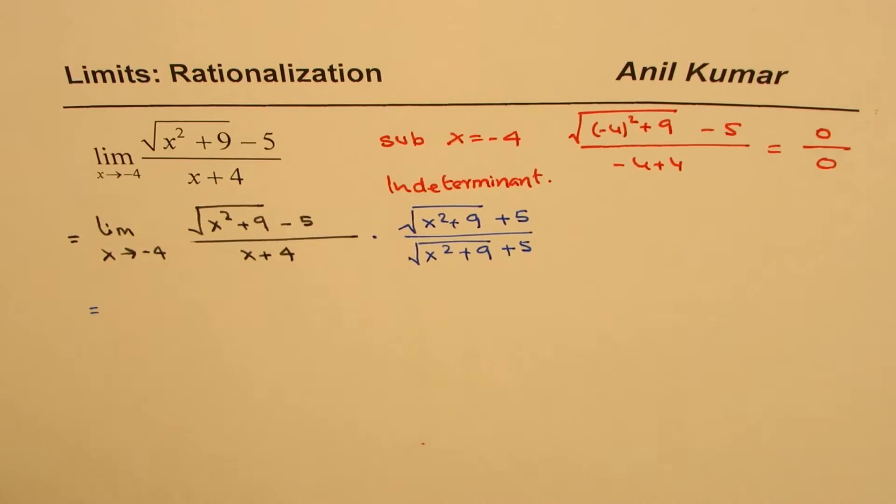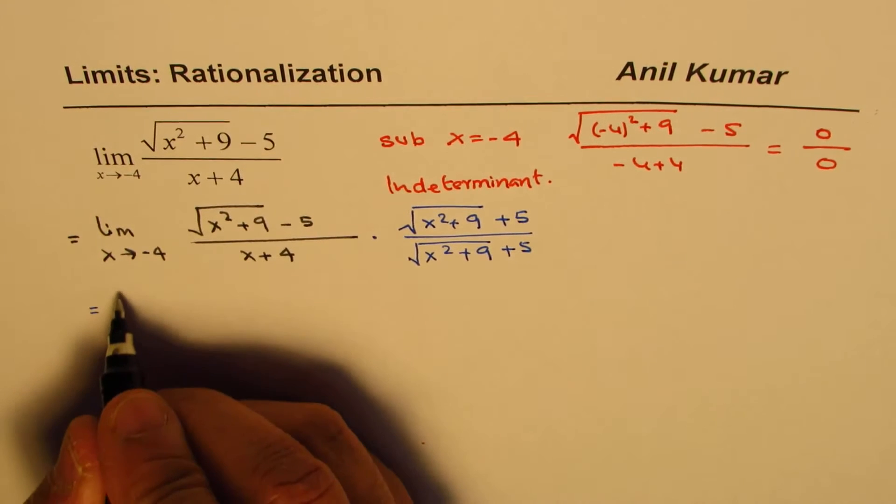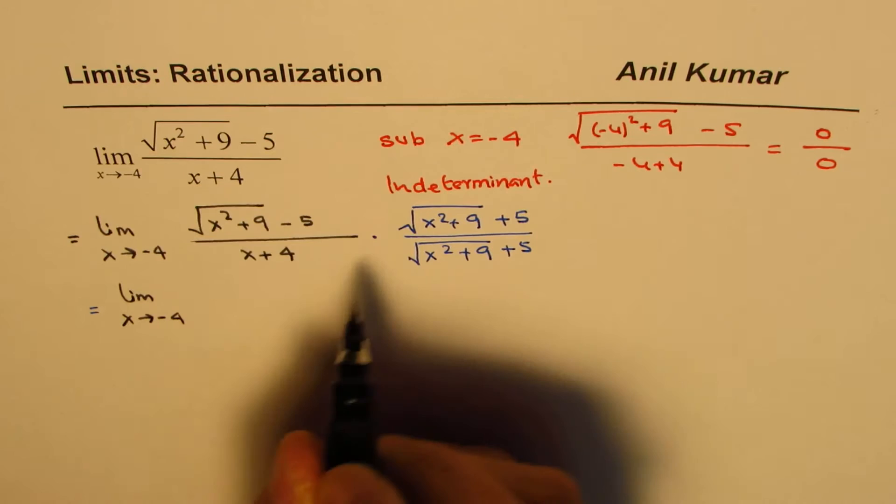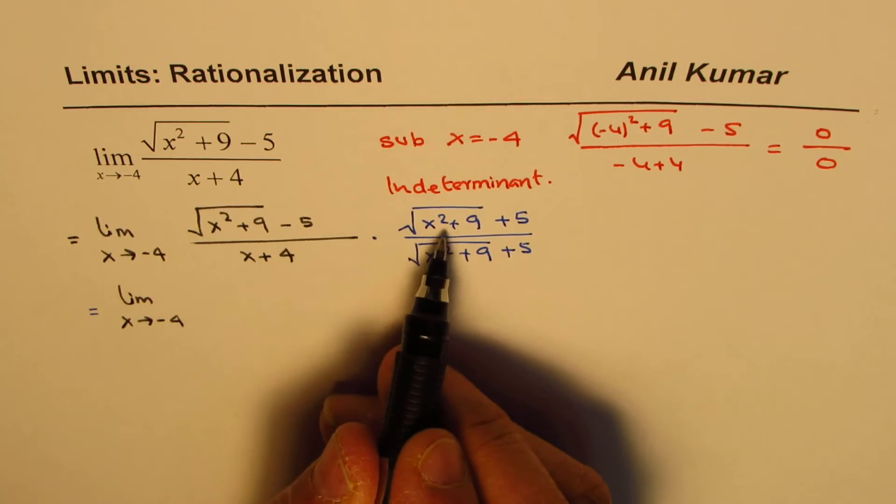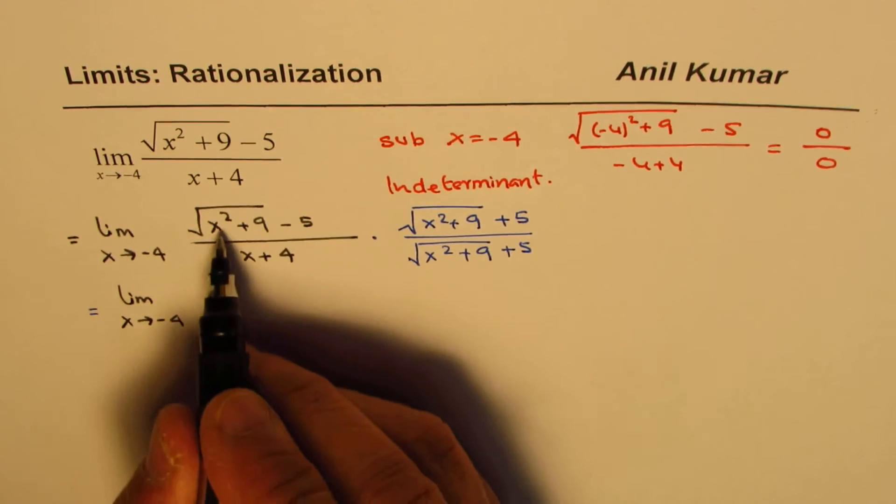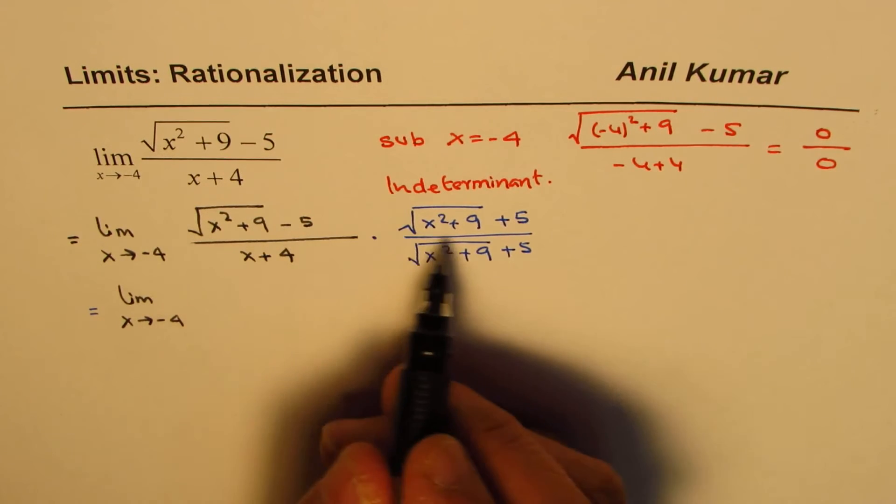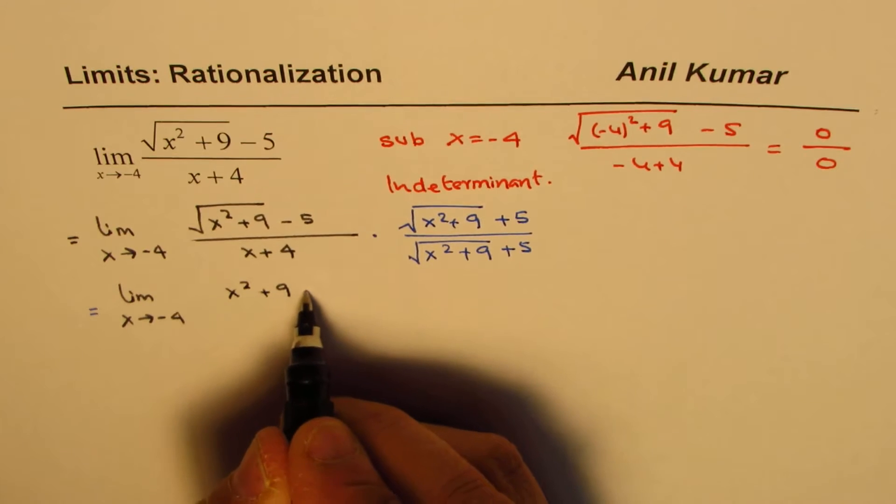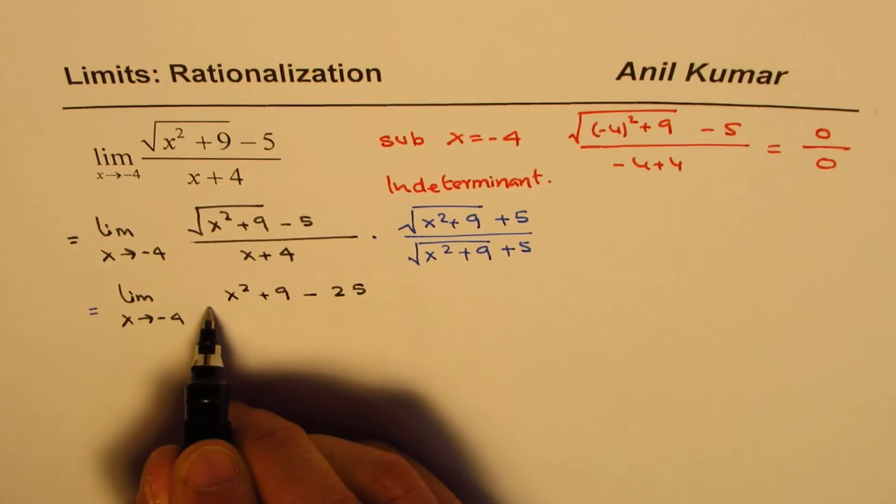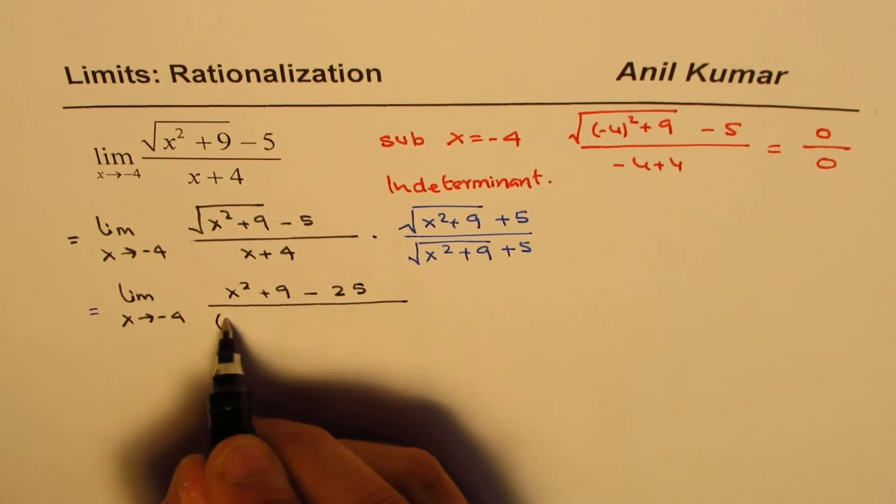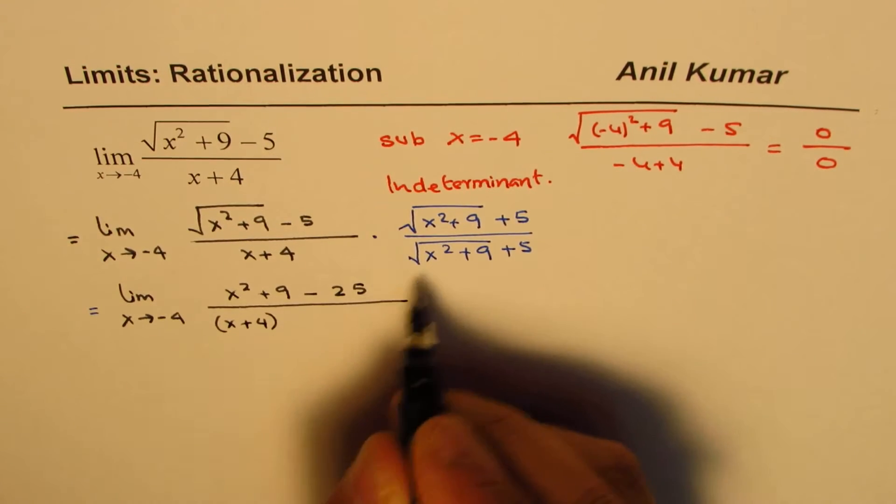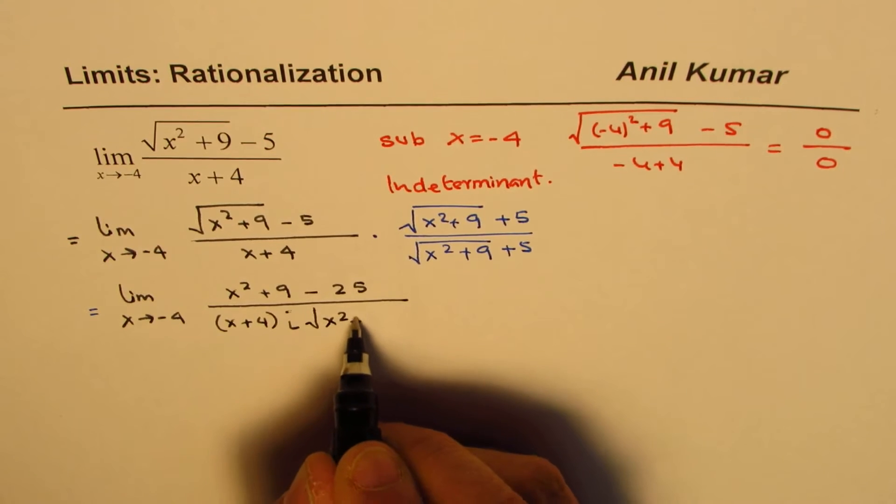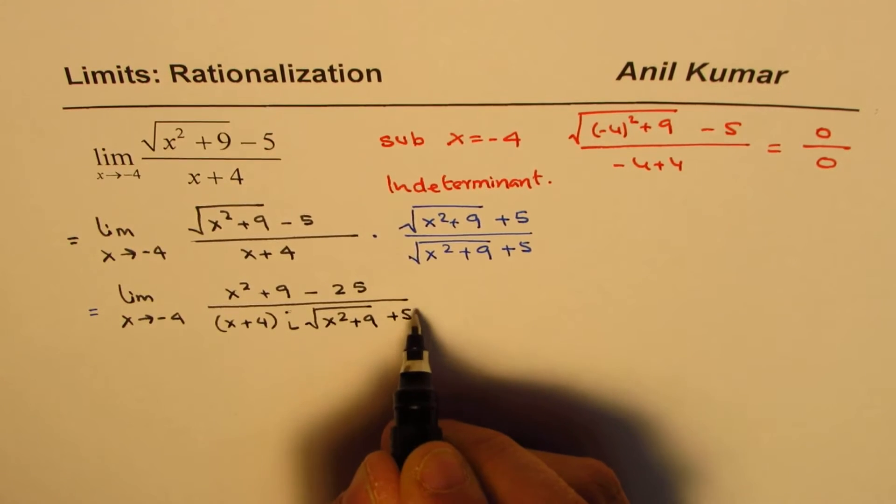When you do so, you get limit as x approaches minus 4. Using the formula (a+b)(a-b) equals a² minus b², the numerator becomes (x²+9) minus 25, which simplifies to x² minus 16. The denominator is (x+4) times √(x²+9) plus 5.